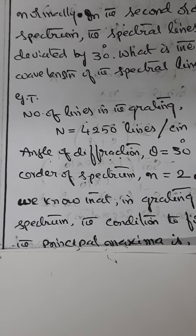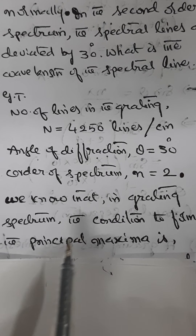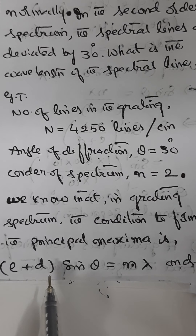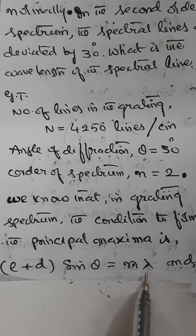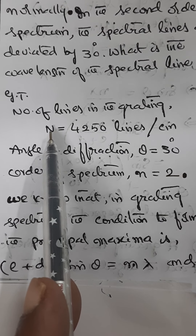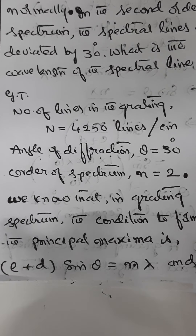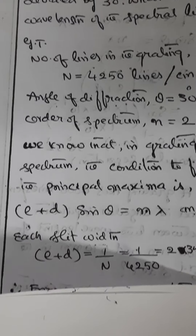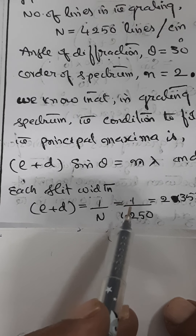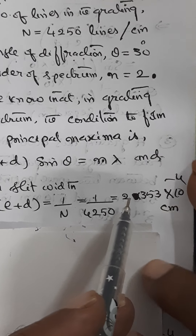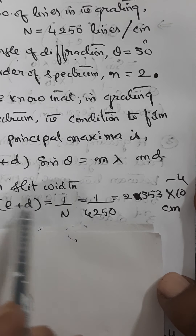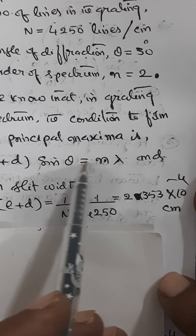Now, we know that in grating spectrum, the condition for forming principal maxima is: (e + d) × sinθ = nλ. This is the formula we have. Now, this (e + d) — its reciprocal is equal to the N value. So therefore, 1/N is equal to (e + d). Each slit width we can calculate: e + d = 1/N. N is given as 4250, so e + d = 1/4250, which is approximately 2.353 × 10⁻⁴ centimeters. Now, in this equation, we substitute the e + d value.